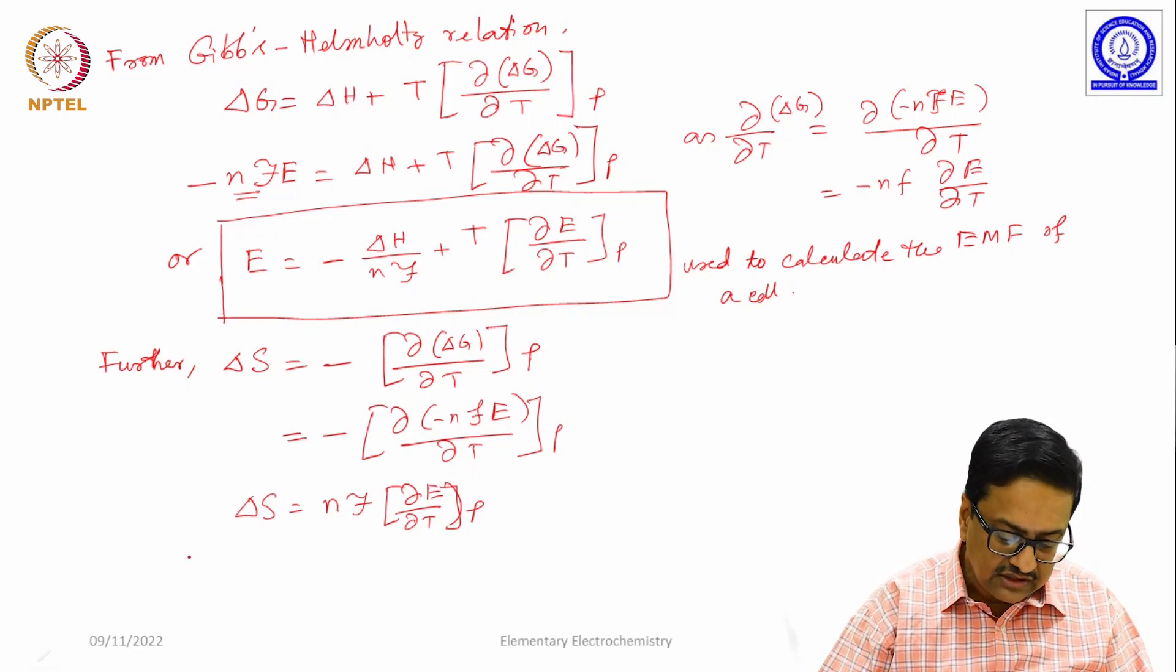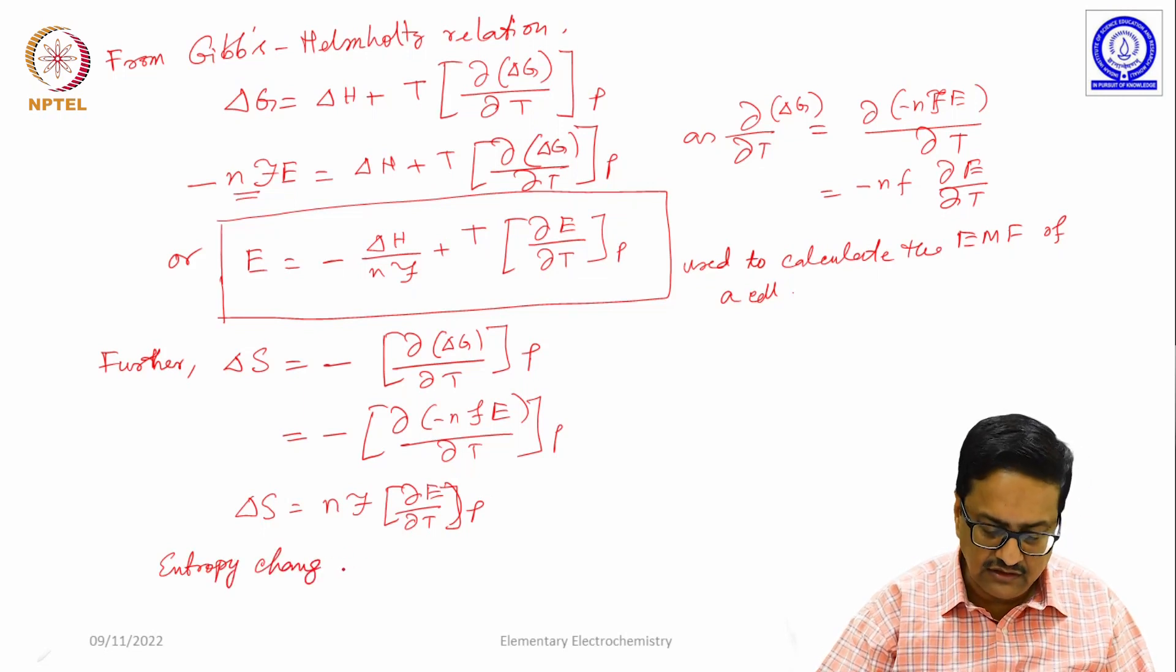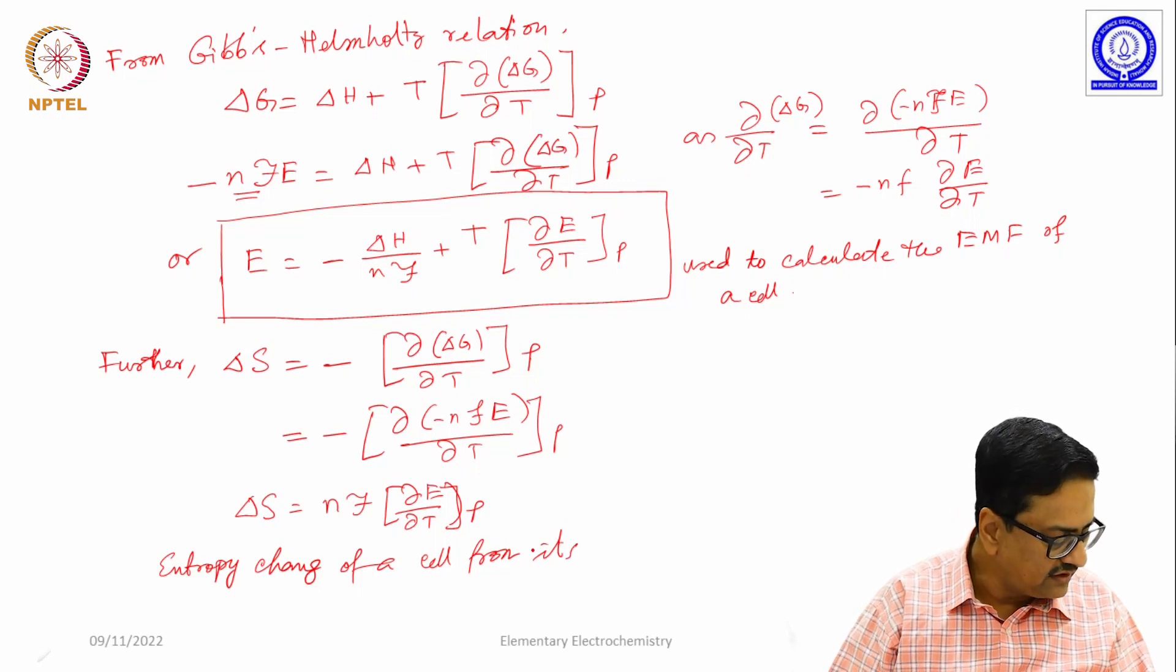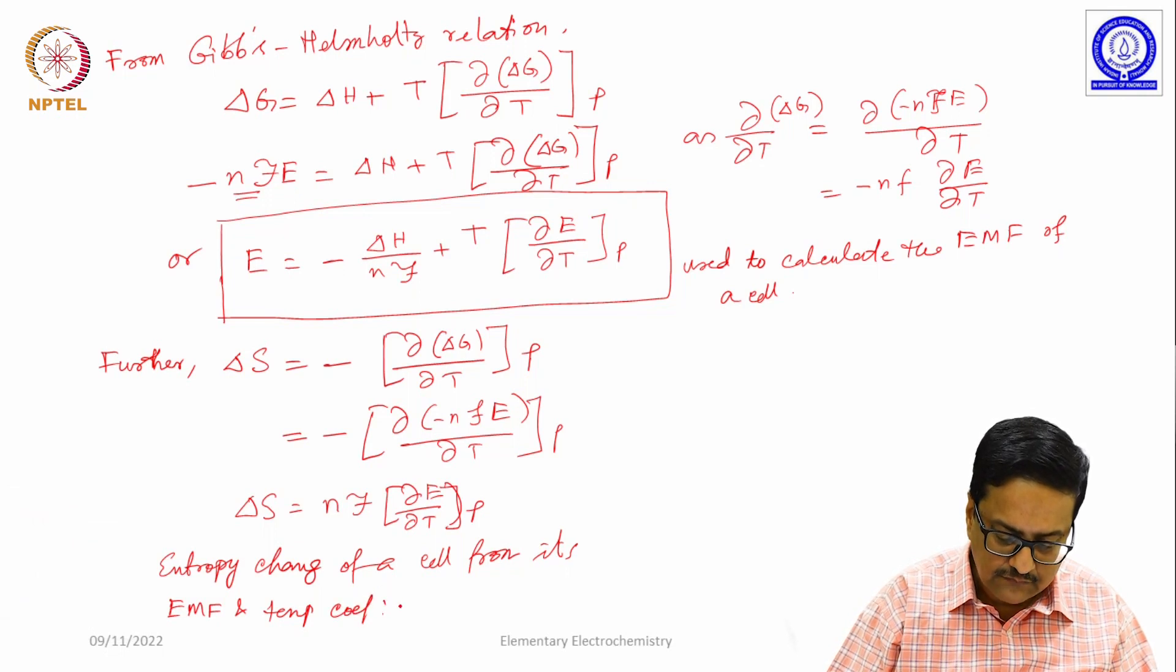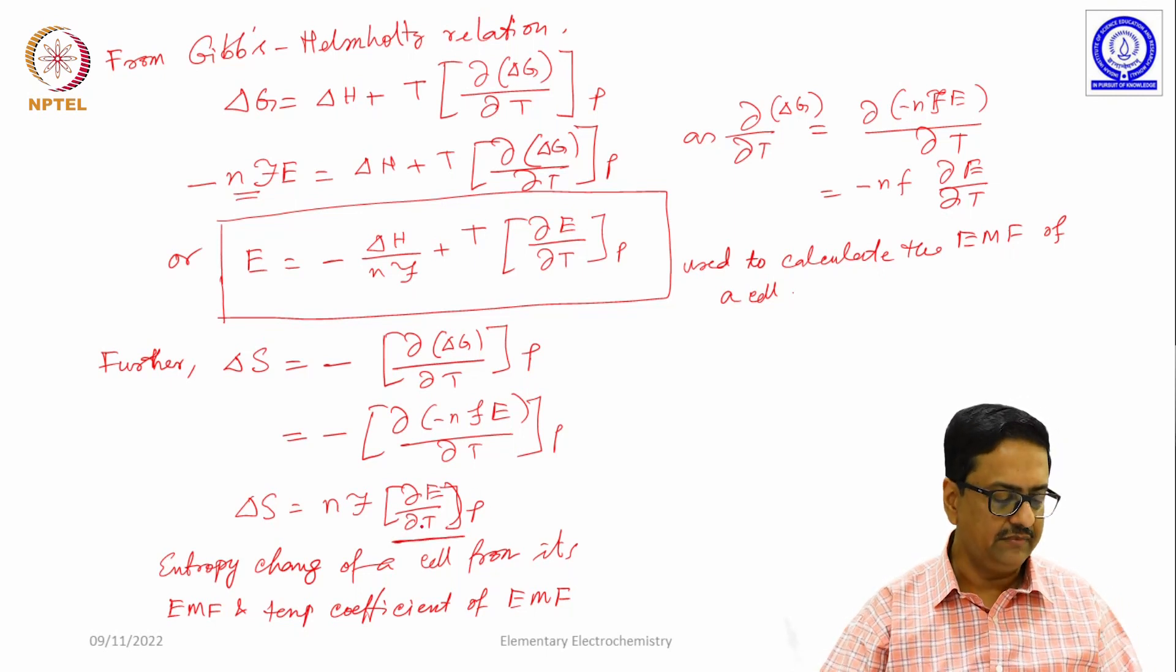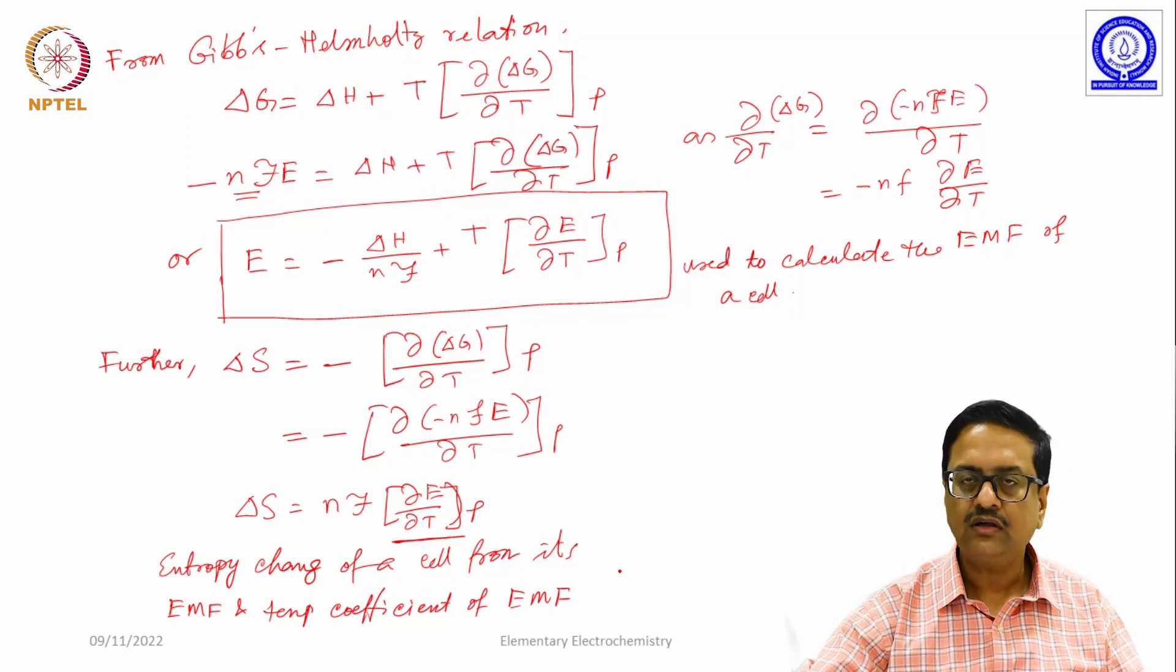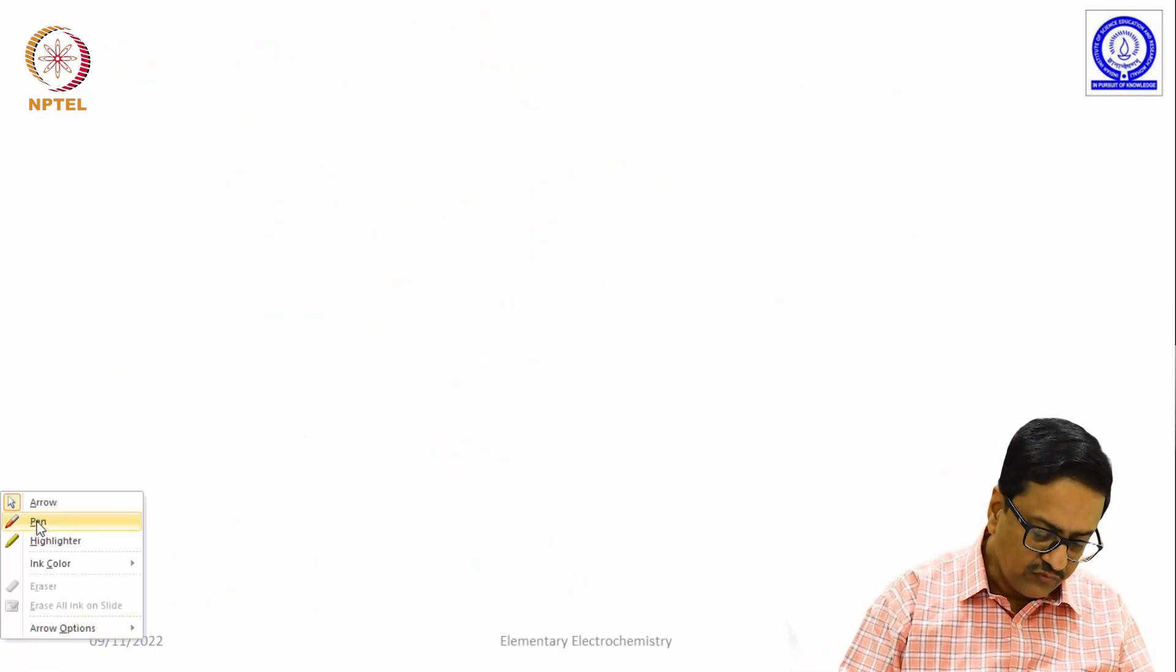Here we are getting the entropy change of a cell from its EMF and temperature coefficient of EMF, because this is the temperature dependence of the EMF. If you know EMF and its temperature variation, then you can easily calculate delta S for a given cell. Let us discuss one simple problem here.